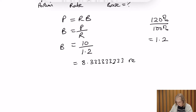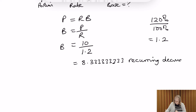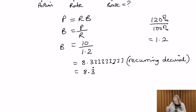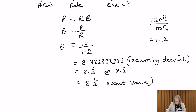This is a recurring decimal — the calculator can only show so many digits, but the 3s go on forever. A shorthand we use is a dot above the repeating digit, or a short line. We can also write the exact value as 8 and one-third, reinforcing how useful fractions are for representing exact values concisely.